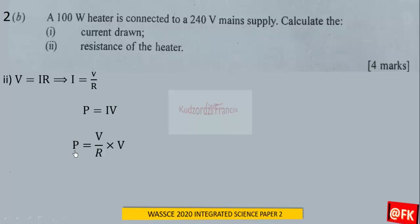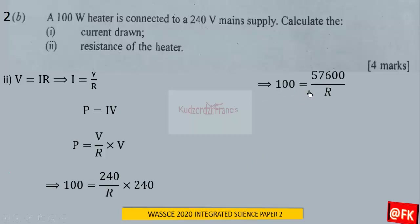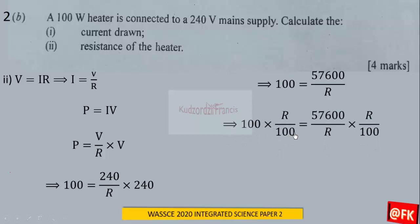We substitute the values: V is 240 and P is 100, giving us 100 = 240² / R, which is 100 = 57,600 / R. Multiplying both sides by R and dividing by 100, we get R = 576 ohms.